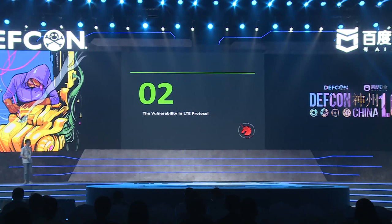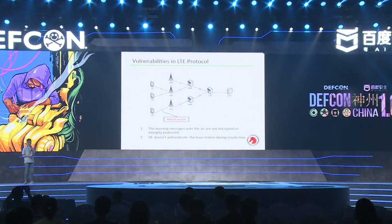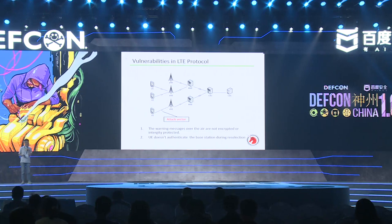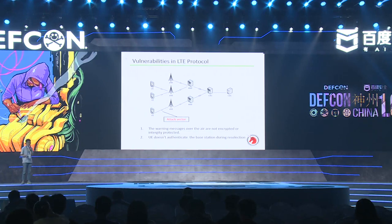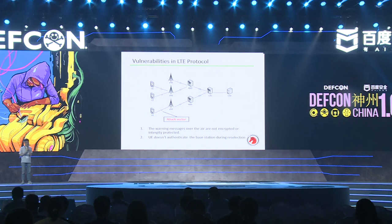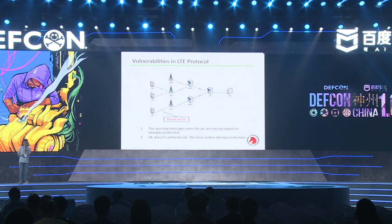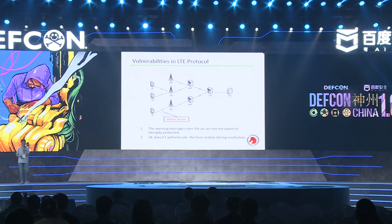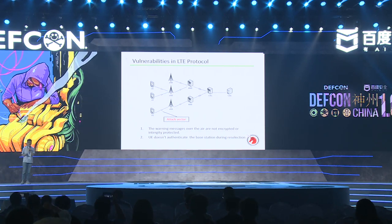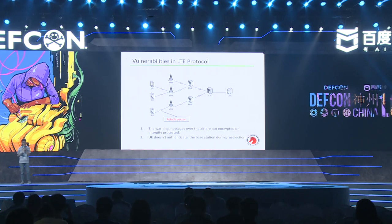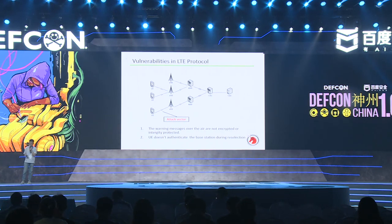The answer is yes. This is the basic architecture of the public warning system. The CBC and CBE are used for generating the warning message, and the MME and eNB are used for transmitting it from the network to mobile phone users. There is a vulnerability in the air interface: warning messages are not encrypted or integrity protected — they are transmitted in clear text. Another vulnerability is that when a mobile phone connects to a new cell, it does not authenticate the authenticity of that cell.